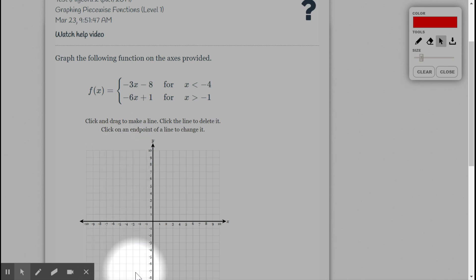So in order to graph this, instead of using the y-intercept, because that's not even in our domain for the first one, we can use this as an endpoint and then use the slope and see what the pattern is.